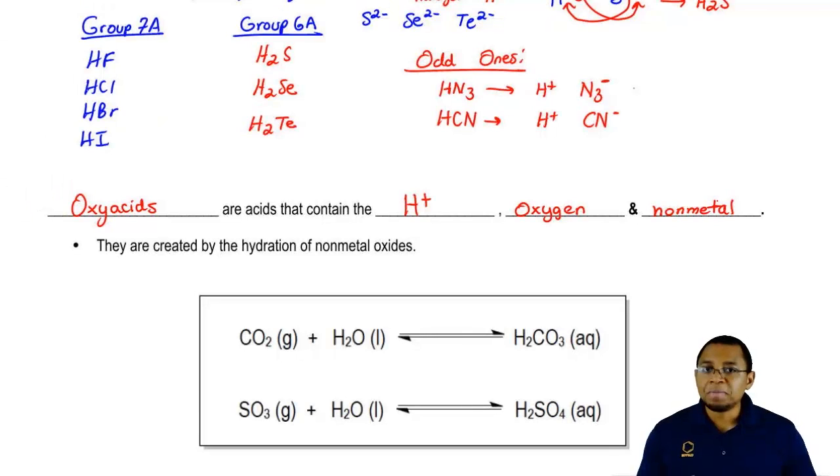The difference between binary and oxy is that oxy has oxygen involved, binary does not. Something else they both share in common is that they usually do not possess any metals. Again, when we have a metal involved, that compound will be a base.